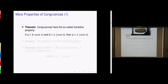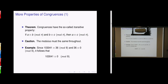Congruence has the transitive property: if a is congruent to b modulo n, and b is congruent to c modulo n, then a is congruent to c modulo n. When dealing with congruences, all the n values must be the same — if you change n, it's a different story.